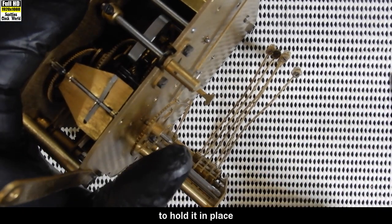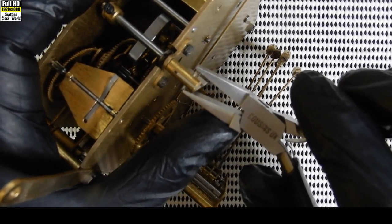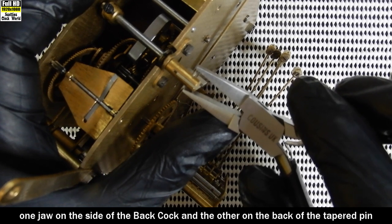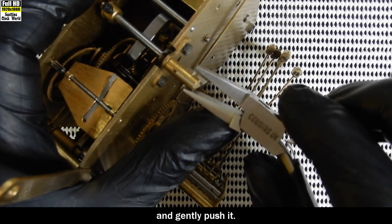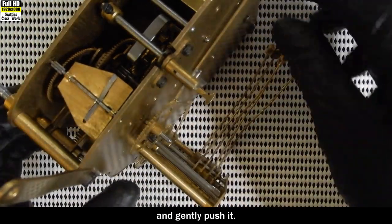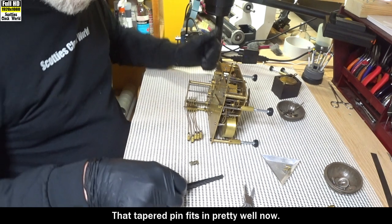Now, to hold it in place, we don't push it in very tightly, but we put a pair of pliers, one jaw on the side of the back cock, and the other on the back of the tapered pin, and gently push it. Right, now that's in there. That tapered pin fits in pretty well now.